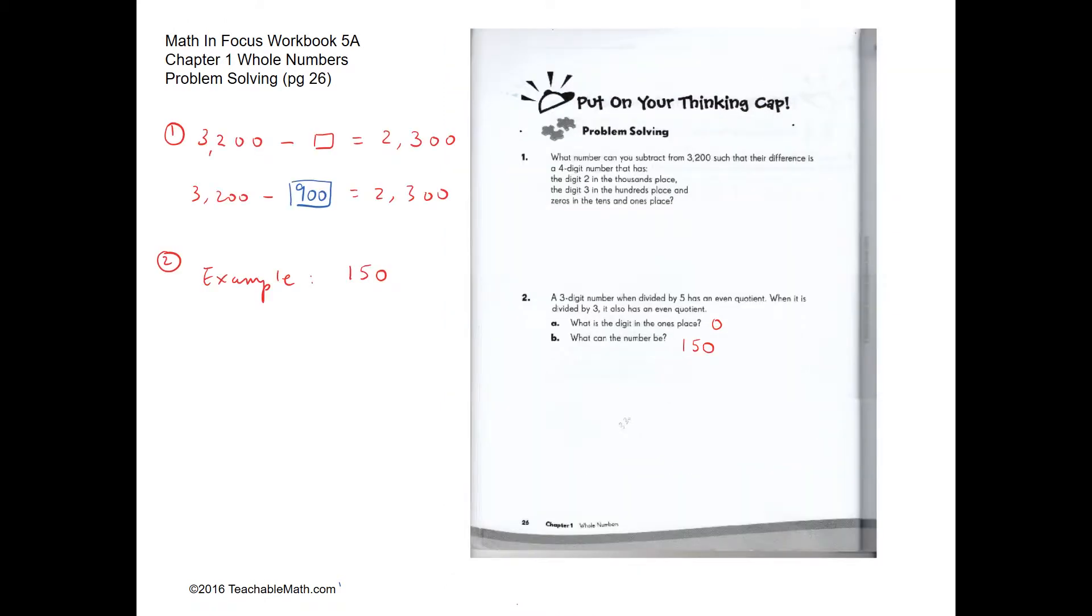Problem solving. What number can you subtract from 3,200 such that the difference is a four-digit number that has a two in the thousand place, three in the hundred place, and zeros in the tens and ones place? So what number can you subtract from 3,200 so that the answer is 2,300? The number that you need to subtract is 900.